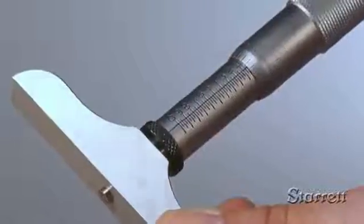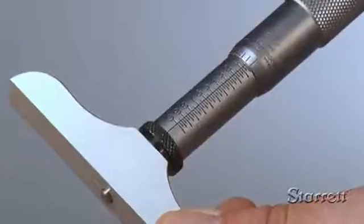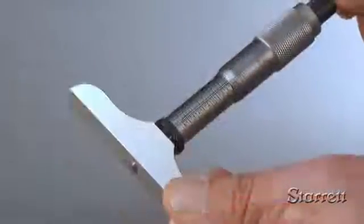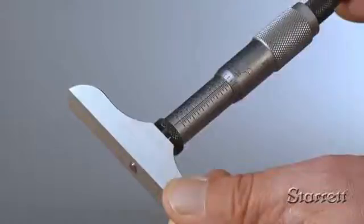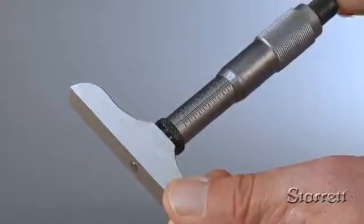The sleeve graduations run in the opposite direction. If the zero to one inch rod is in the tool, zero depth would be when the tip of the rod is flush with the base and the spindle turned out one full inch.